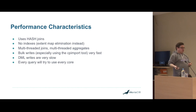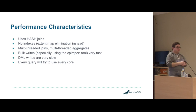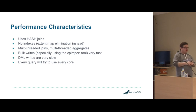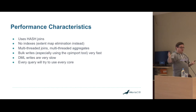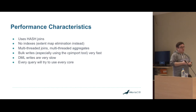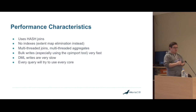Every query is going to try and use every core in the system. So with, say, four worker nodes with four cores each, that means roughly 16 cores are used. Assuming the data is spread across all the nodes, we will try to use all 16 cores for the query.